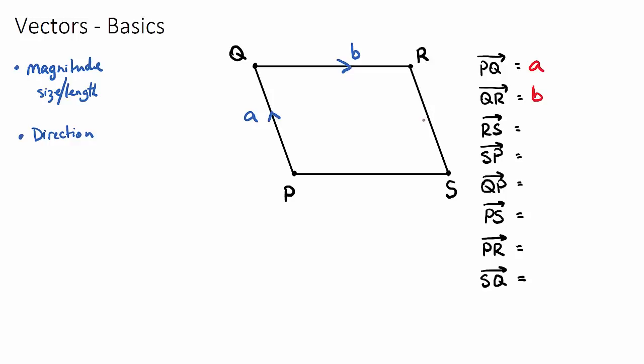What about R to S? Well, there's no vector here, but we now need to think about what a vector is. A vector is the journey. The journey has a distance, which is a magnitude, and a direction. From R to S, it looks like it's the same distance as from Q to P because it's a parallelogram.